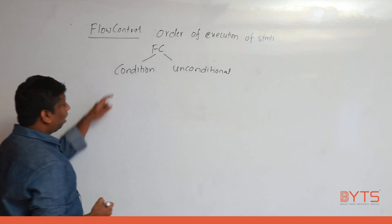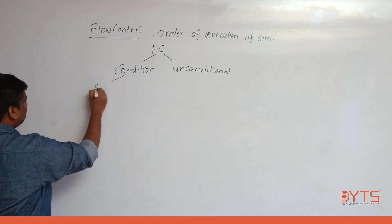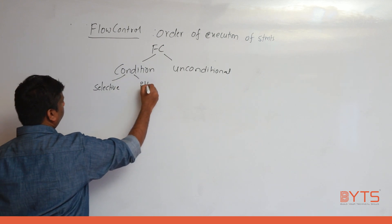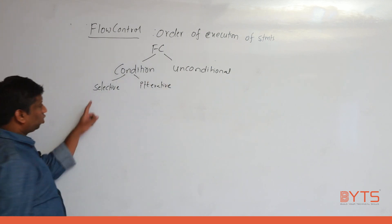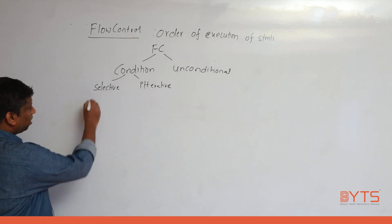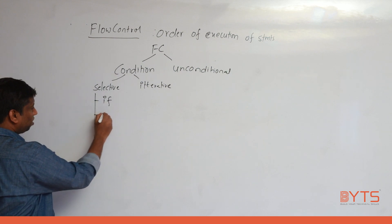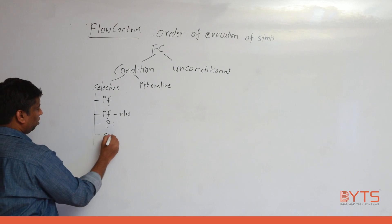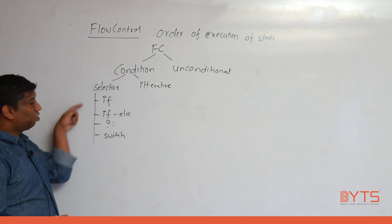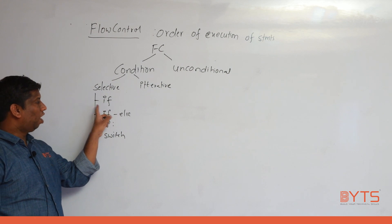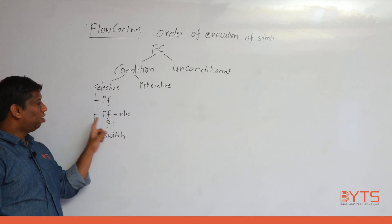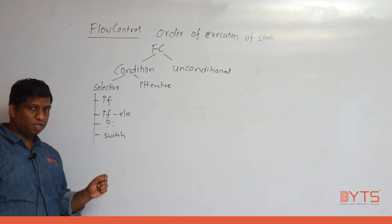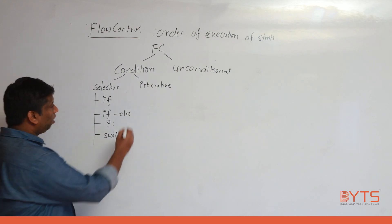Conditional is also divided into two types: one is selective flow control and another is iterative flow control. In selective flow control, we have if, if-else — already discussed — question mark colon, and switch. There is no iteration concept here; only if condition true execute, or else don't execute. Switch means n choices are there, select any one choice.